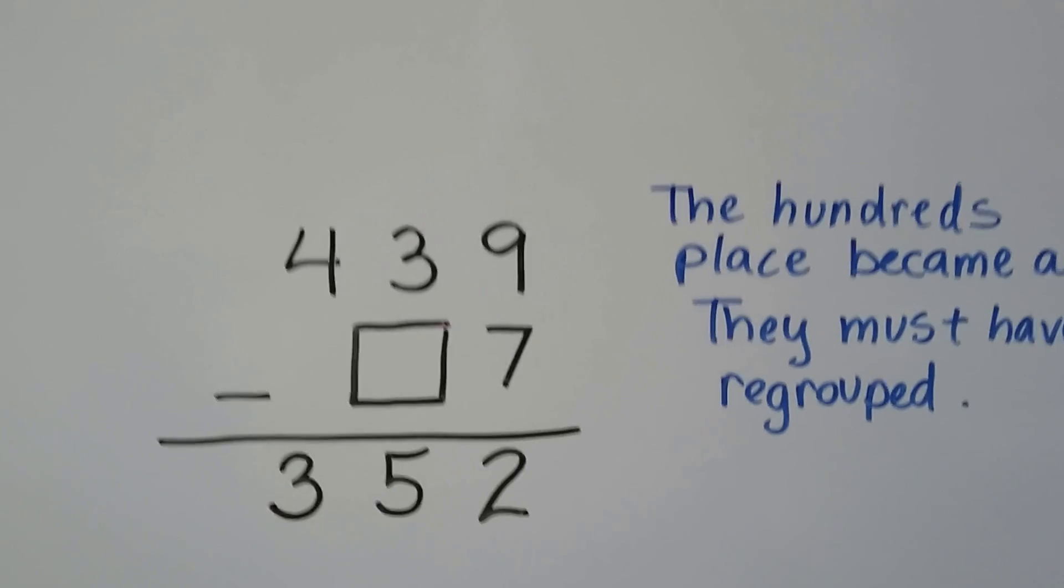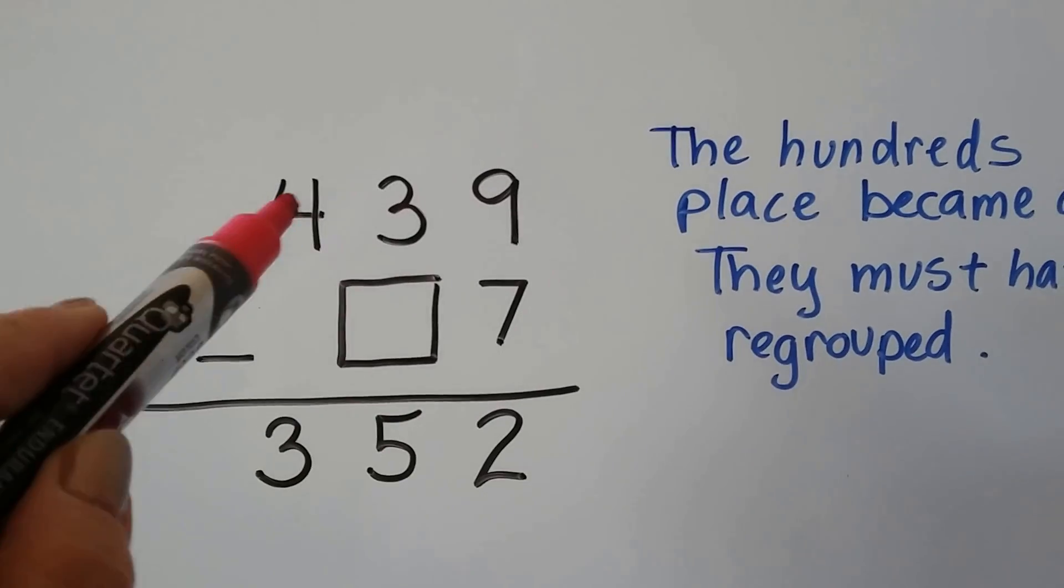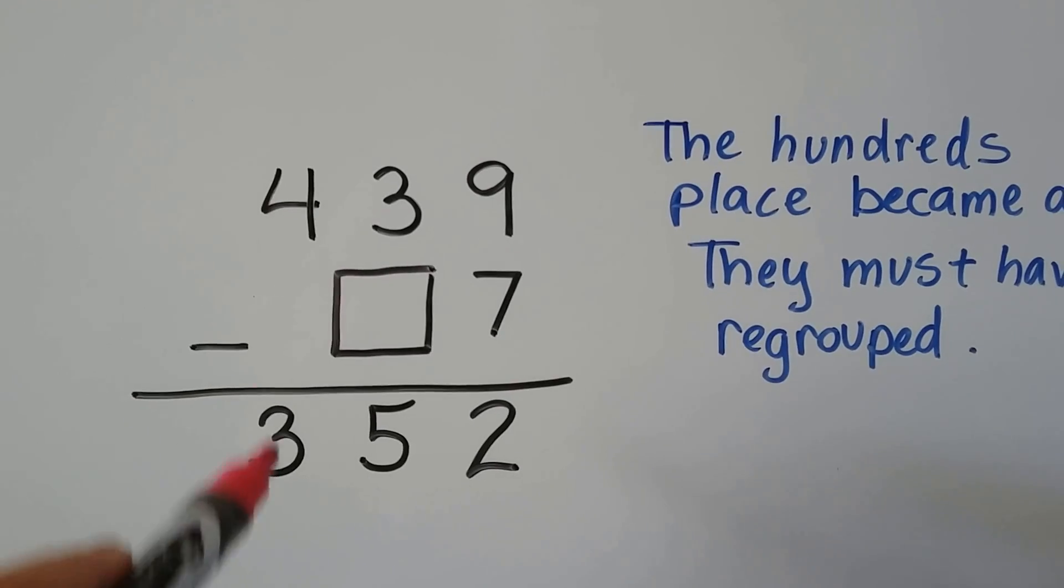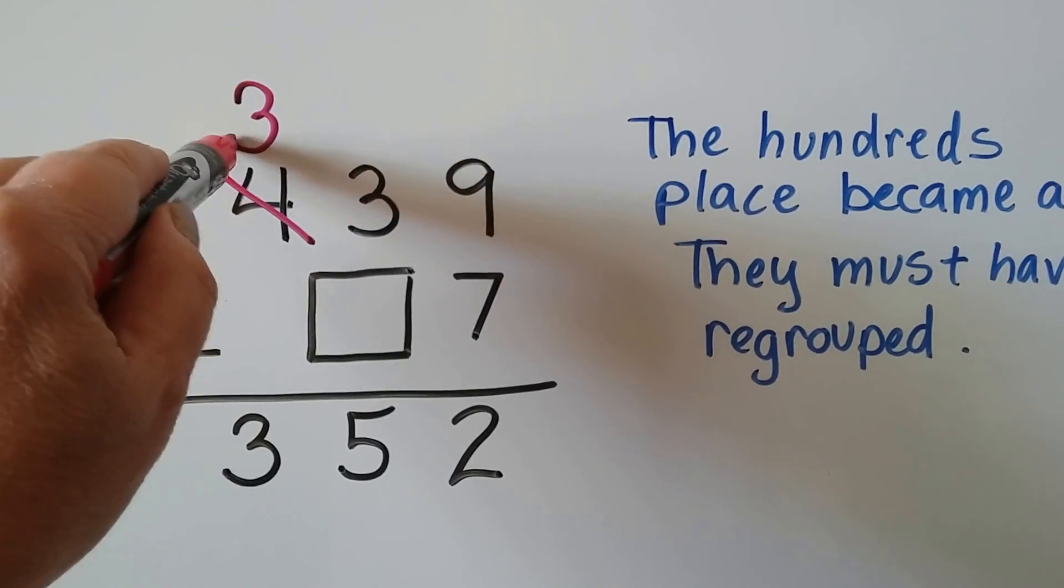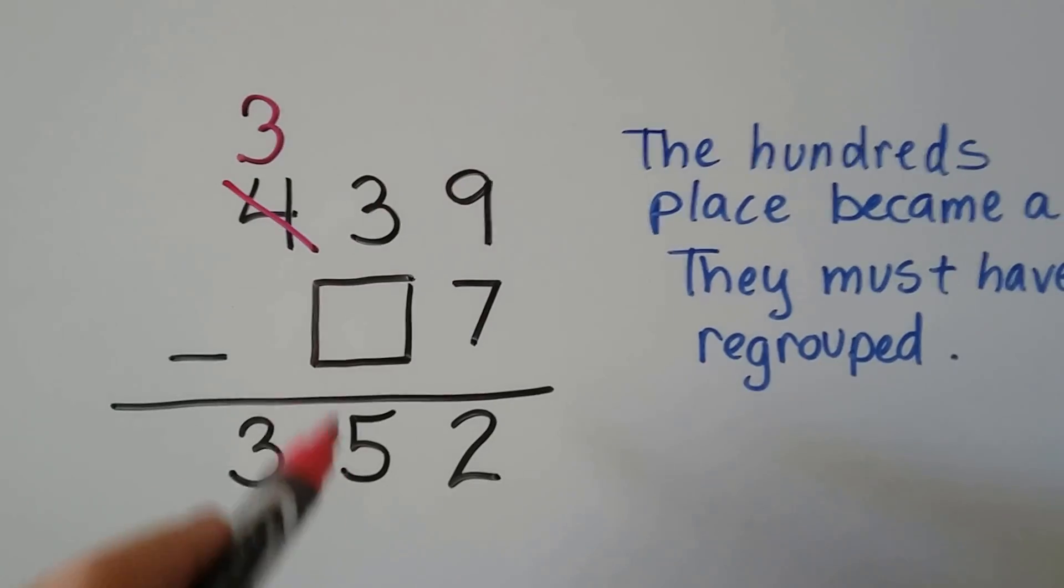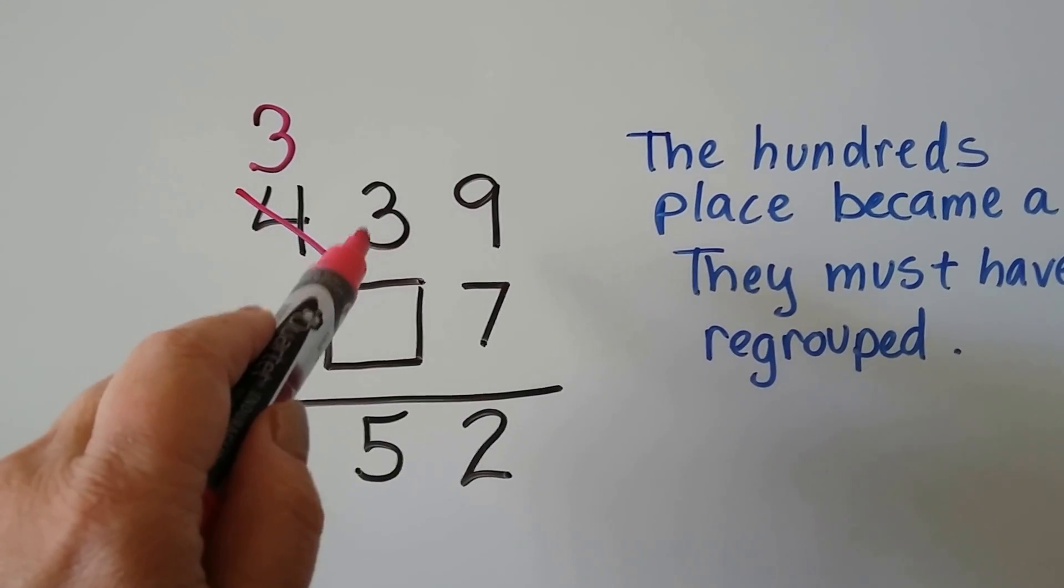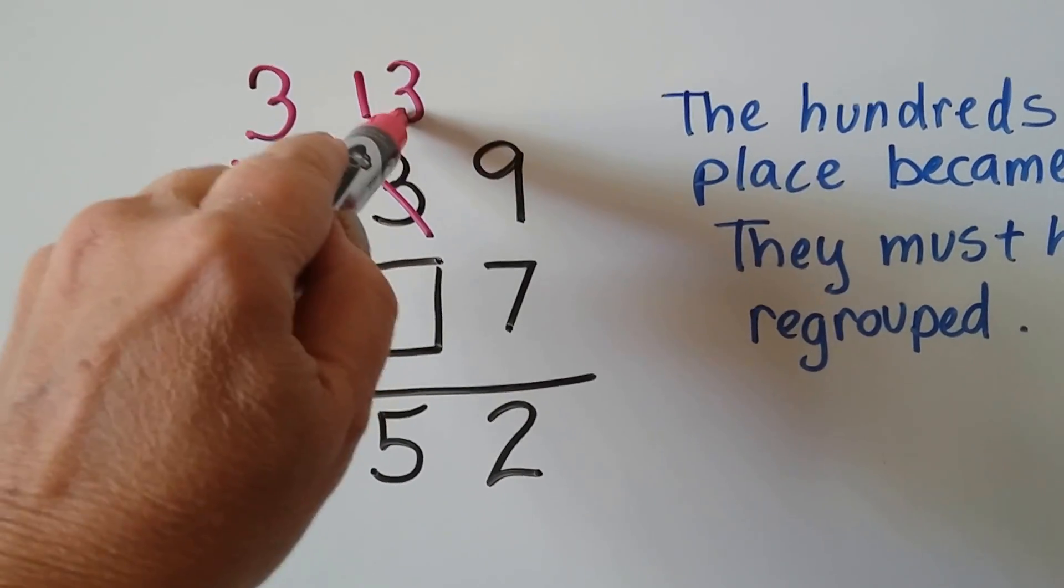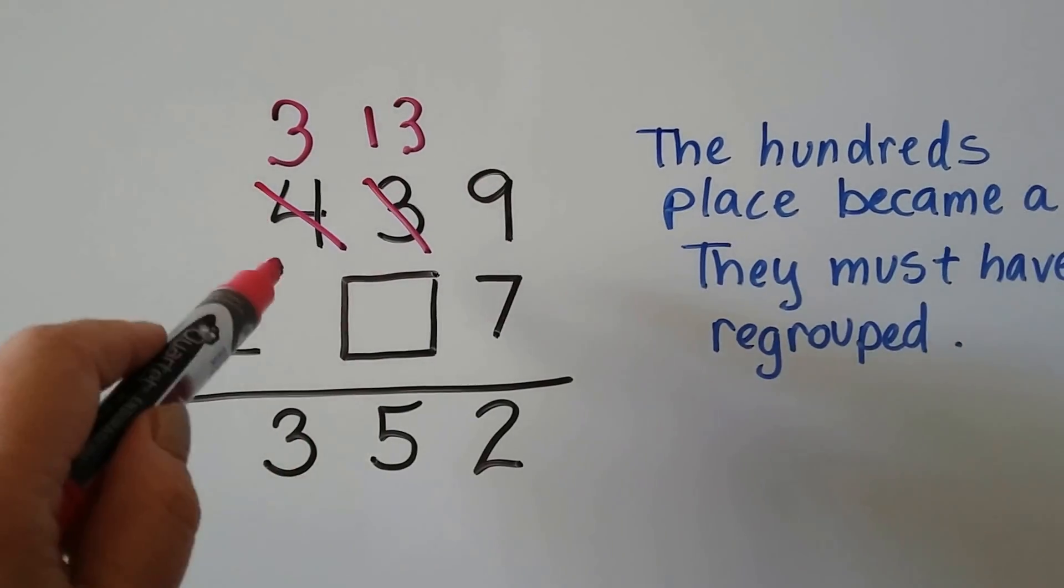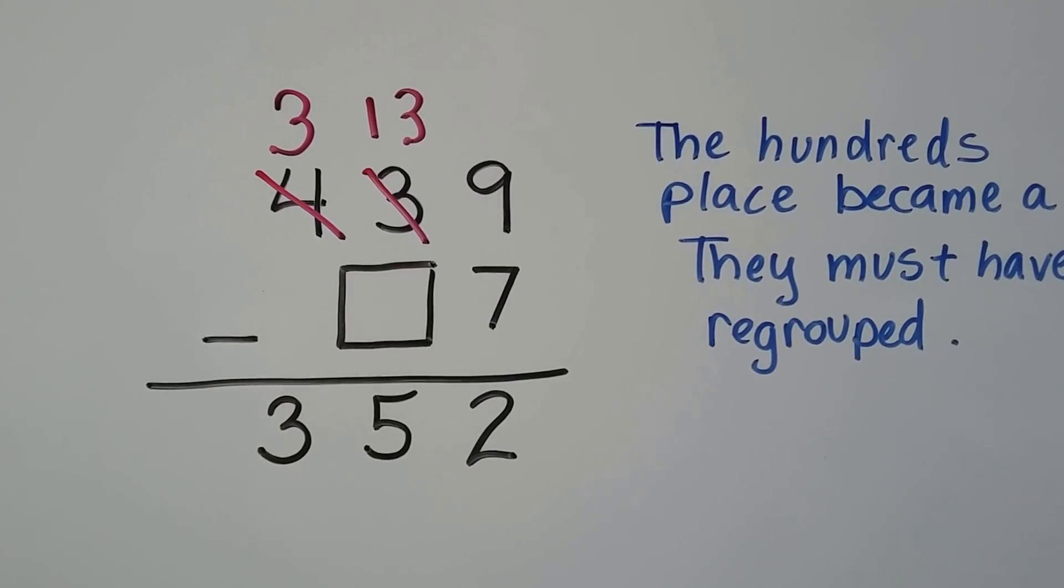We've got one more. We have 439 and we're taking away a two-digit number. But look, the hundreds became a 3. And we weren't taking any hundreds away. Well, that means they must have regrouped and made it a 3. That means that this must have been more than a 3. It must have been a 13. It had to have given some tens to the tens place.